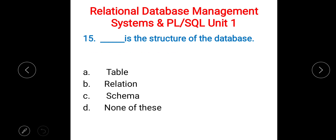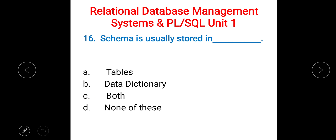Next: dash is the structure of the database. A) table, B) relation, C) schema, D) none of these. The right answer is C) schema. Next: schema is usually stored in dash. A) tables, B) data dictionary, C) both of the above, D) none of these. The right answer is B) data dictionary.